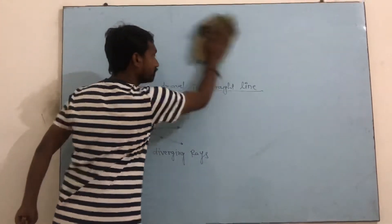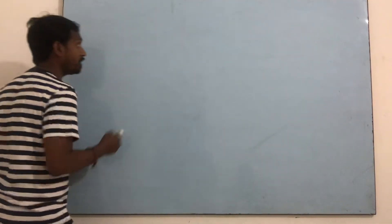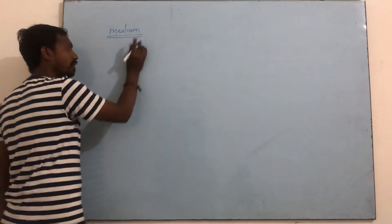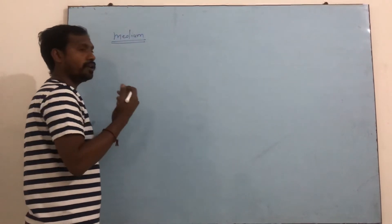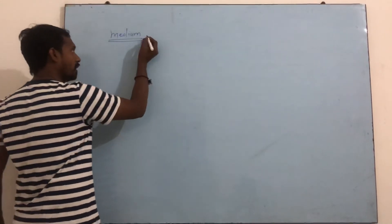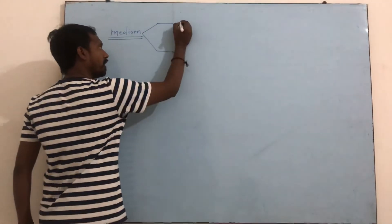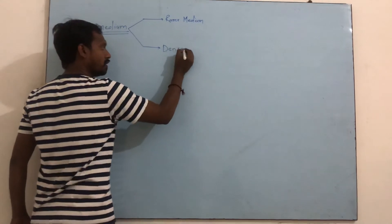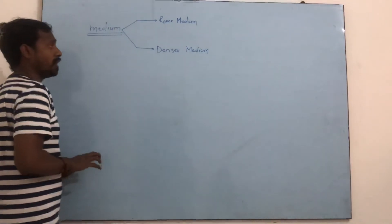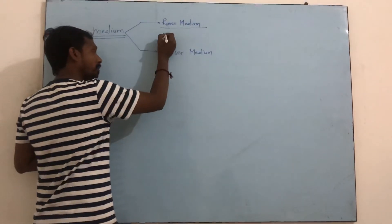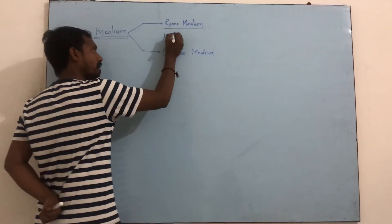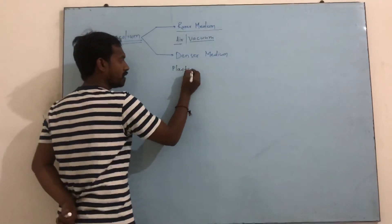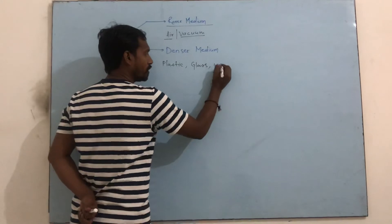Does light travel in vacuum? Yes, light can travel in vacuum. Light also travels in a medium. We define two mediums: one is a rare medium and another is a denser medium. Rare medium includes air or vacuum. Denser medium includes plastic, glass, and water.